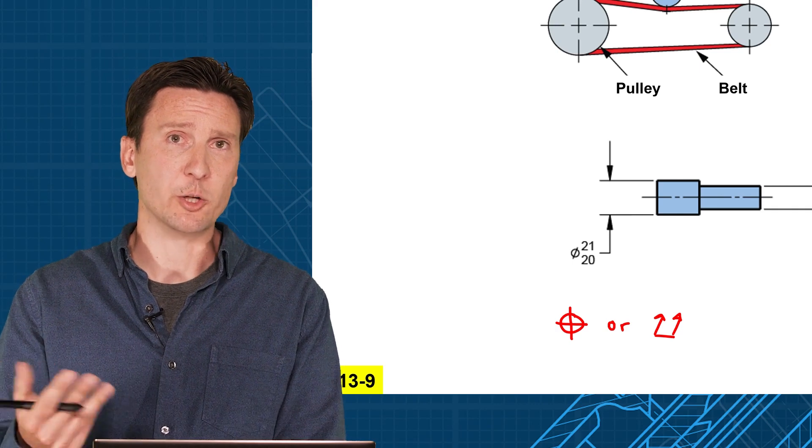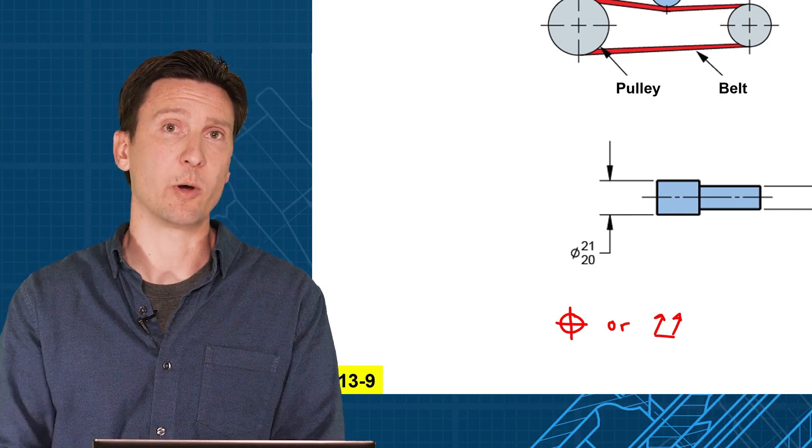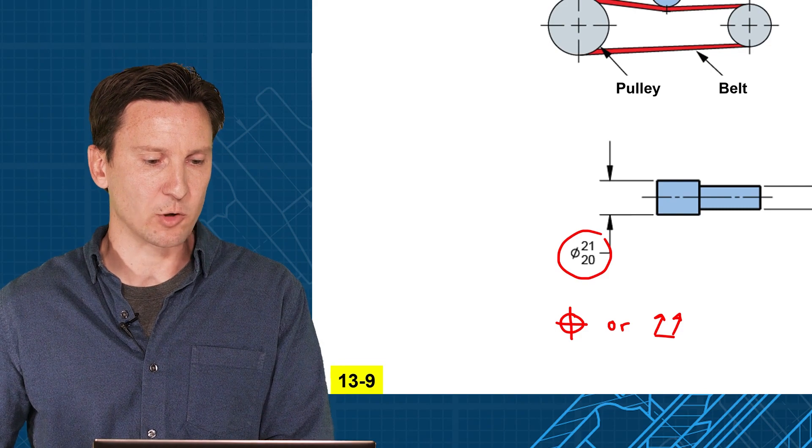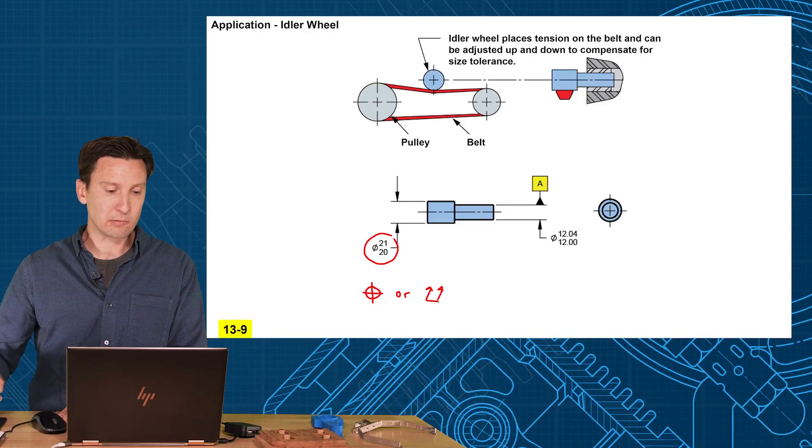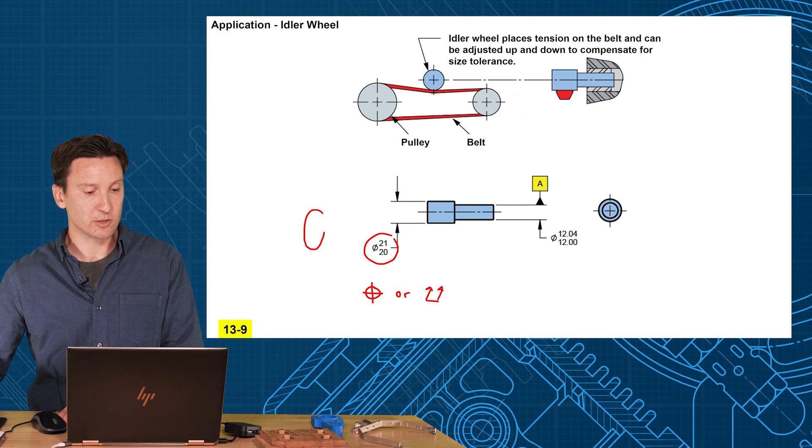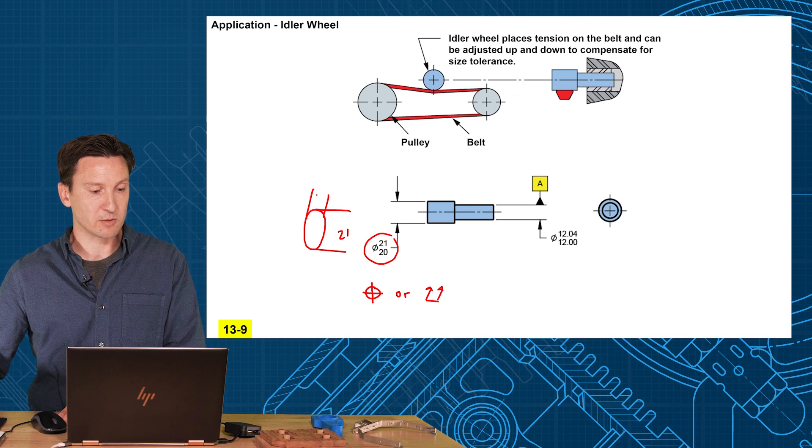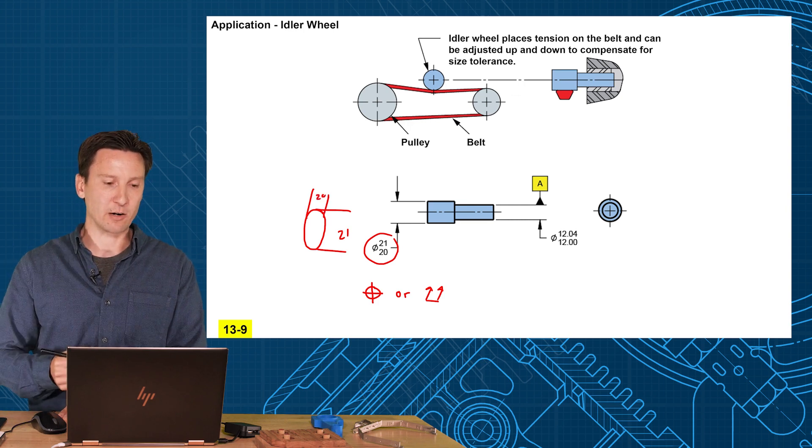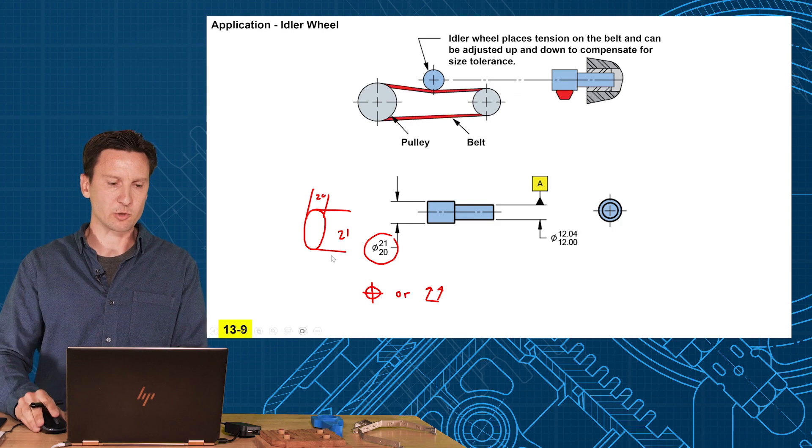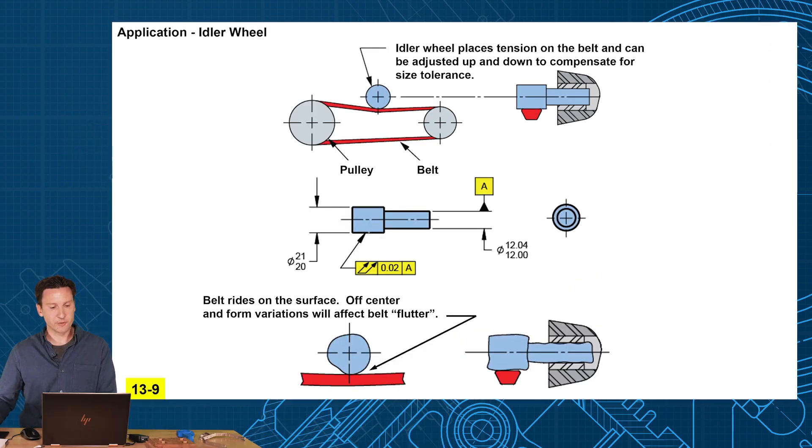So if our goal is to make that belt run true and not flutter and bounce around, what symbols do we want? Position or runout? Remember the only difference between these is form. Do you need an extra form control with your coaxiality? And I always look to the size first. Did the size control the form very well? Not really. I mean with such a large size tolerance, you could get a shaft that's oval. An oval shaft where this could be as big as 21 and this could be as small as 20, you could get a lot of lobing and problems there. So I think we do want that extra form control here. That's why I added a runout. Runout is a surface control. You have to point to the surface here.